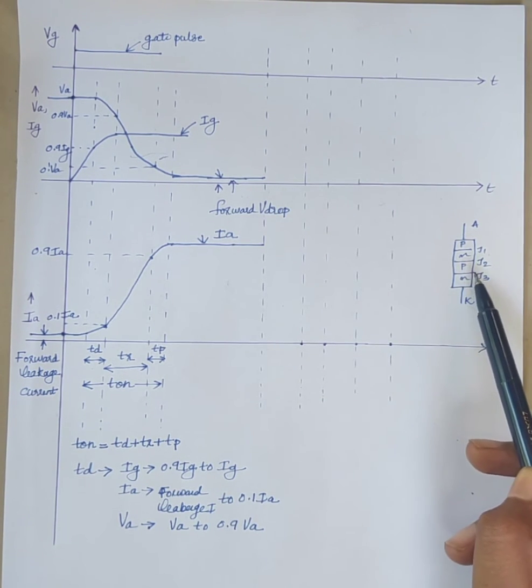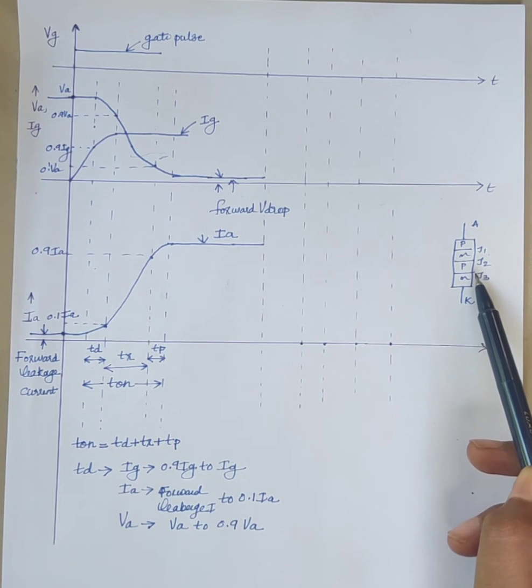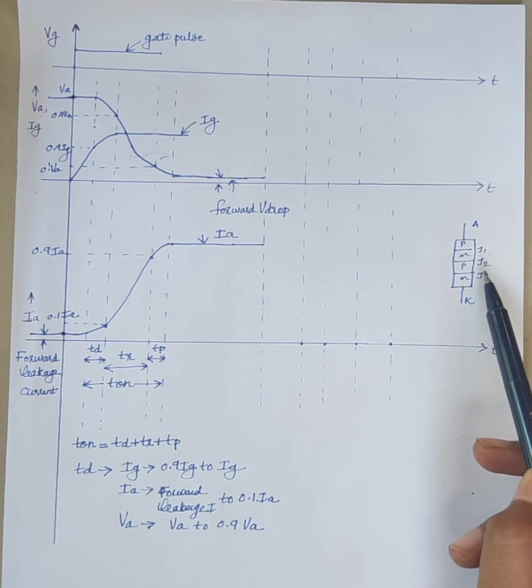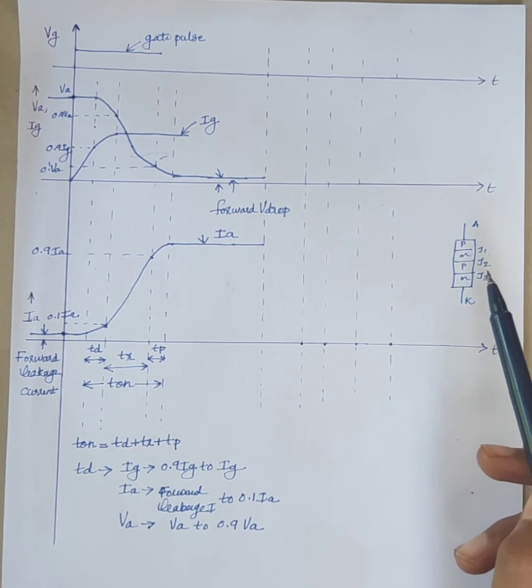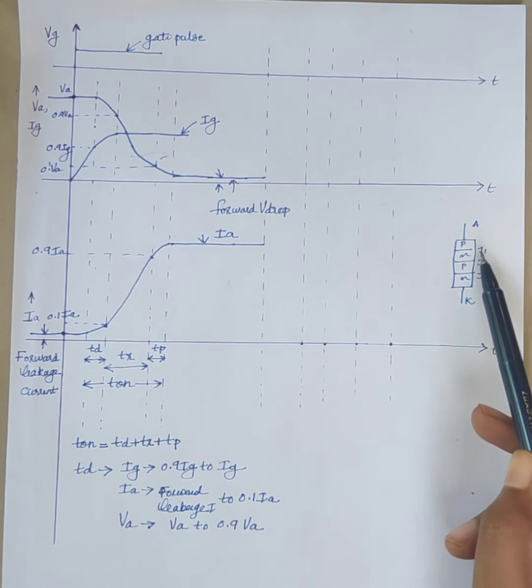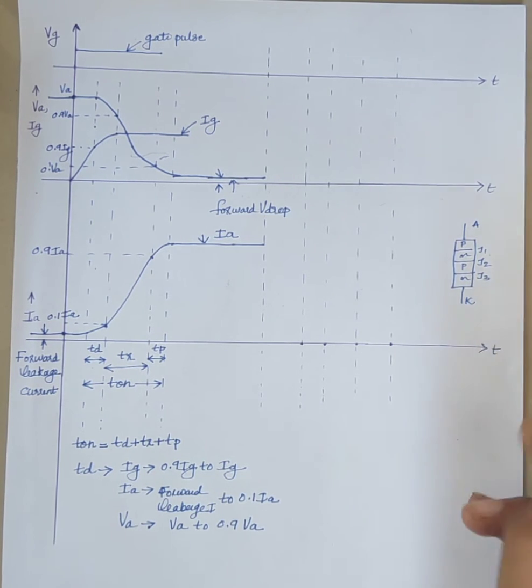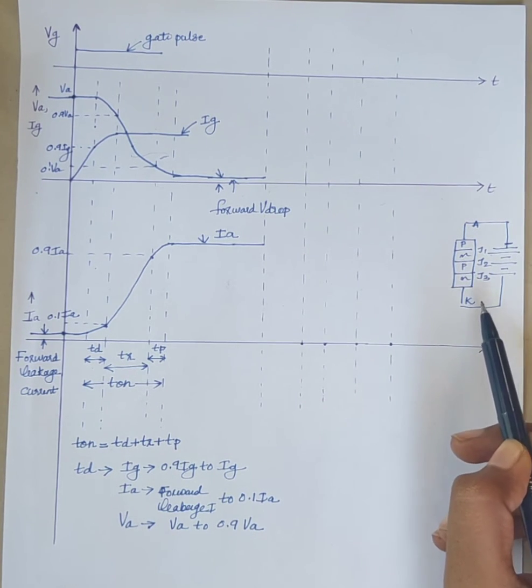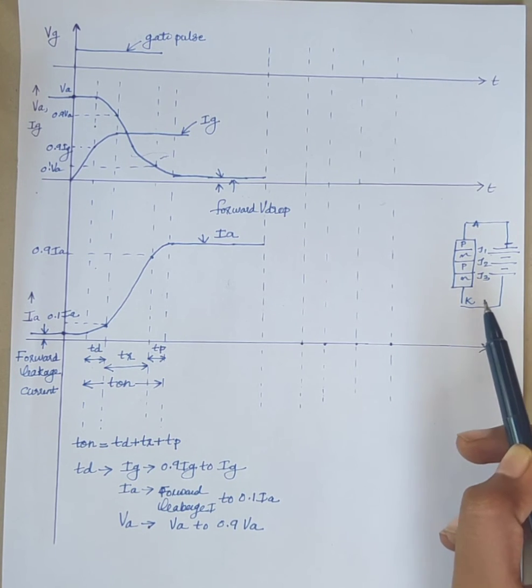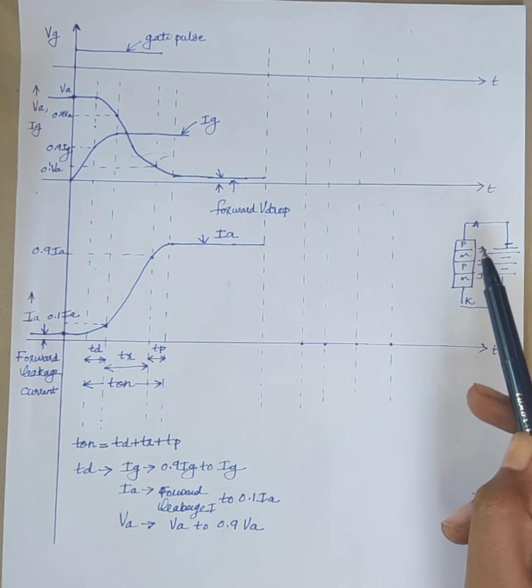Also due to the presence of charge carriers in the four layers, even if the anode current is less than holding current, the SCR is still in the on state. So we have to remove the charge carriers from the four layers. Therefore, the second condition is apply a reverse voltage for a sufficient duration to remove the energy possessed by the charge carriers.